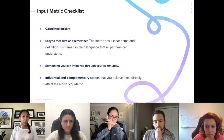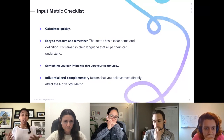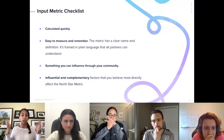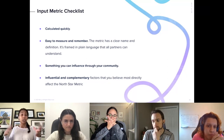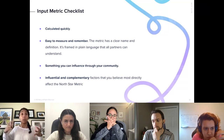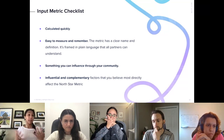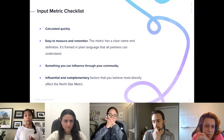Metrics should be something you can influence through your community. Going back to activities community managers do — planning events, putting out content, finding chapter members, giving out badges — those are all things and actions that should be able to influence the metrics you pick. They should be influential, complementary, and something you believe will directly affect your Northstar metrics.